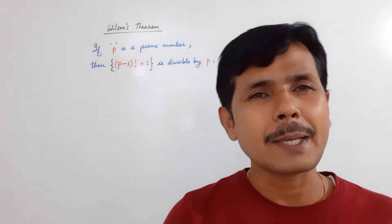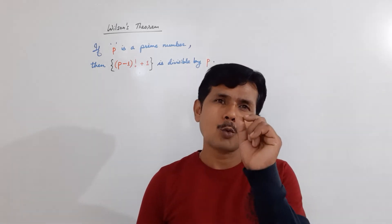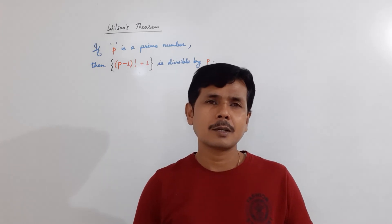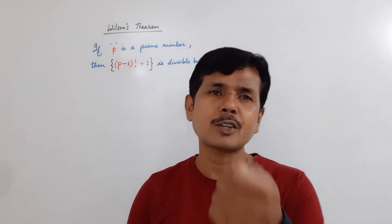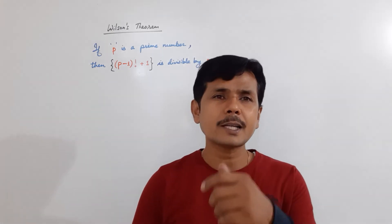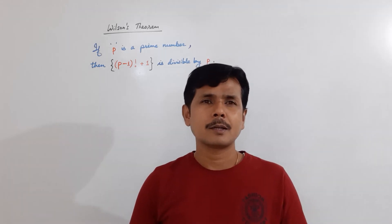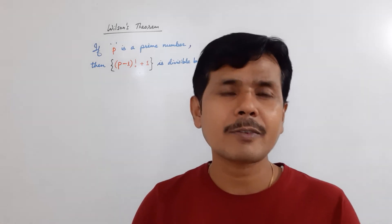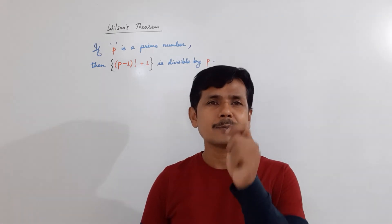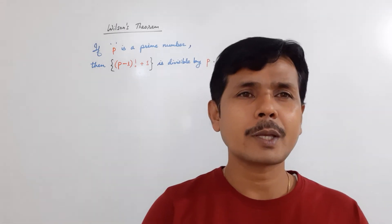If p is a prime number and if I subtract 1 from that prime number, whatever remainder I got, I will take the factorial of it. After calculating its factorial, I will add 1 to it and whatever number I got after adding 1 to it, that number is divisible by the prime number p.